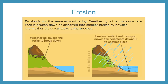Now let's look at erosion. Remember that erosion is not the same as weathering. Weathering is the process where rock is broken down. Erosion is when the water, wind, or ice moves the sediments. In the first picture, weathering is causing rocks to break down into smaller pieces. In the second picture, the cause is rain, and the effect is that the rain is causing the little pebbles from weathering to move down into the ocean.